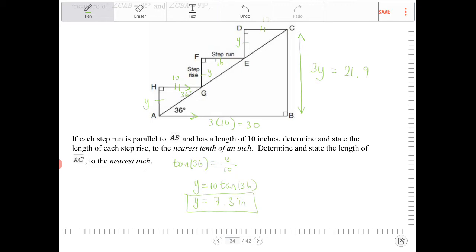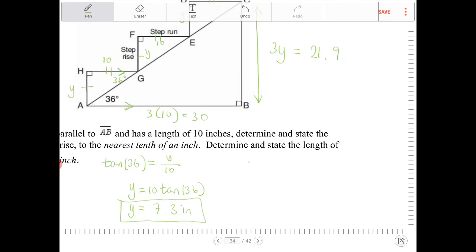We need to figure out what is the length of AC. So to find the length of AC, all we got to do is use the Pythagorean theorem. So we say AC squared is equal to 30 squared plus 21.9 squared.